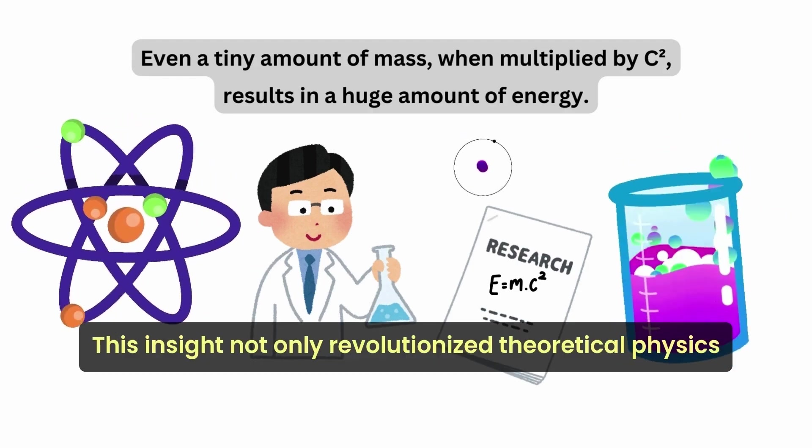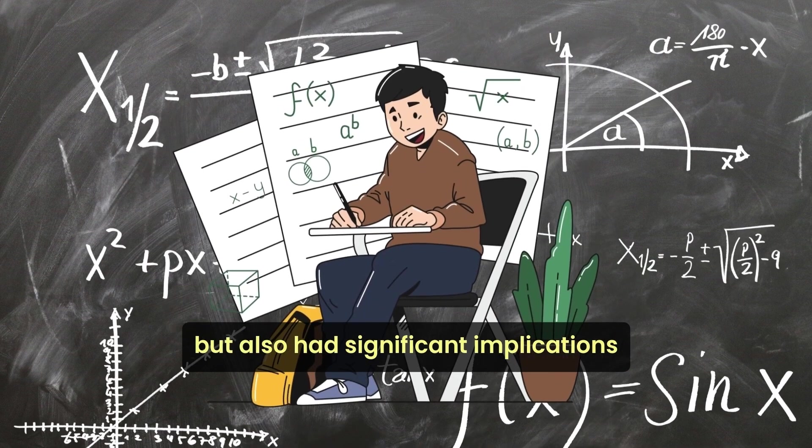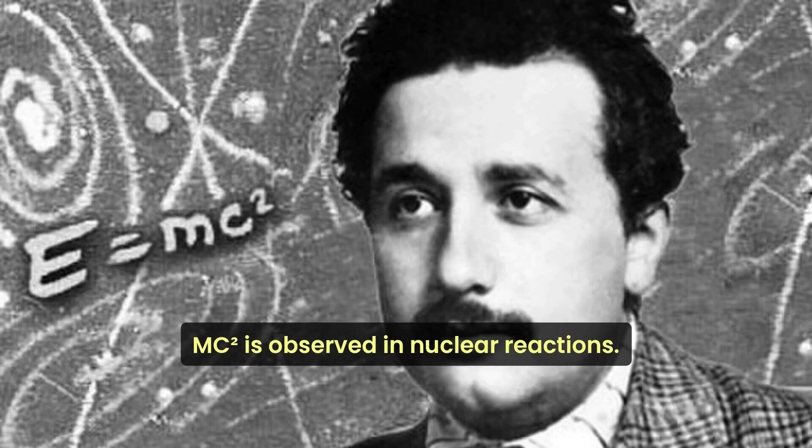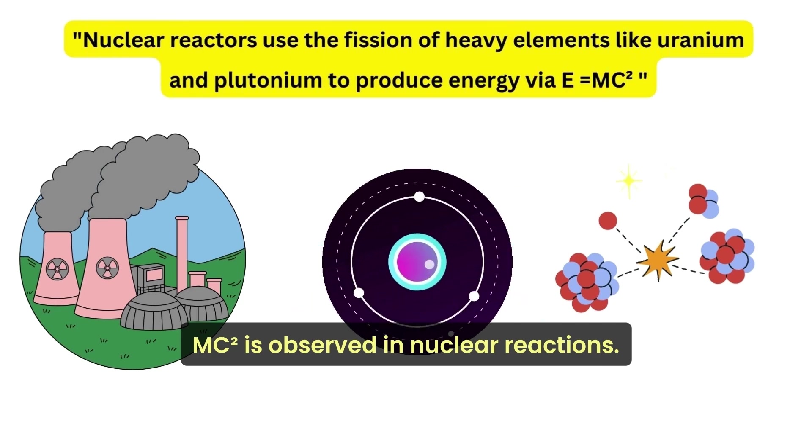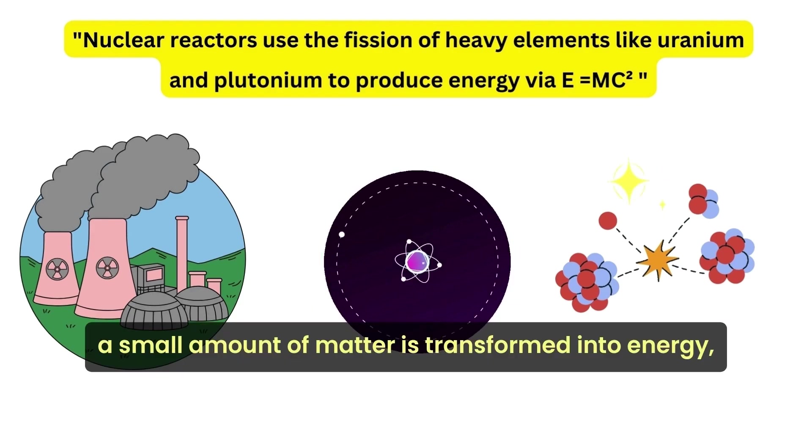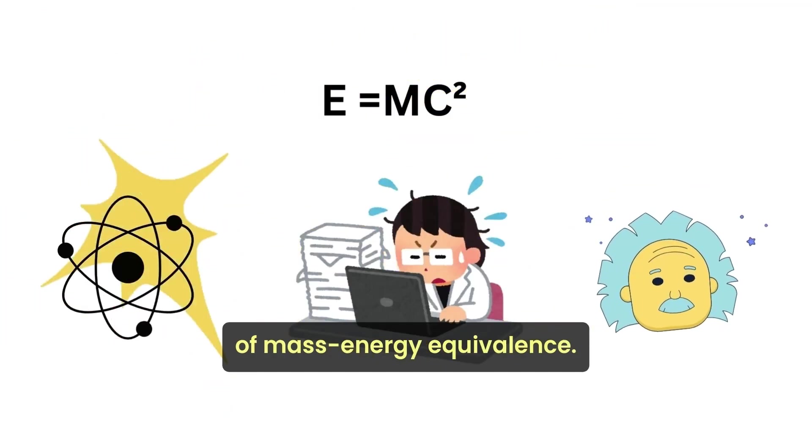This insight not only revolutionized theoretical physics, but also had significant implications for numerous practical applications. One of the most compelling applications of E equals mc squared is observed in nuclear reactions. In both nuclear fission and fusion, a small amount of matter is transformed into energy, demonstrating the practical impact of mass-energy equivalence.